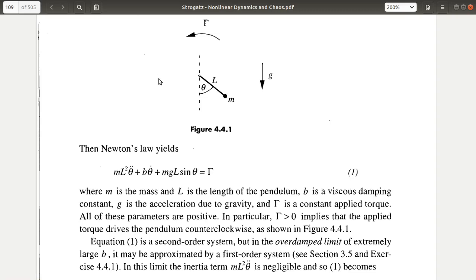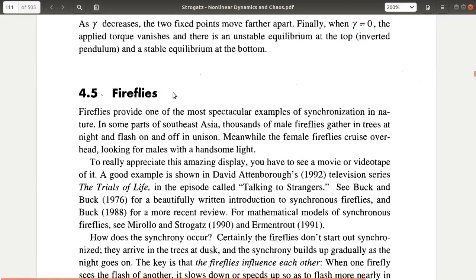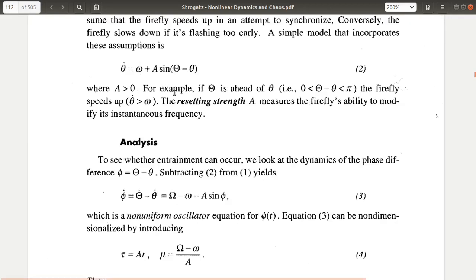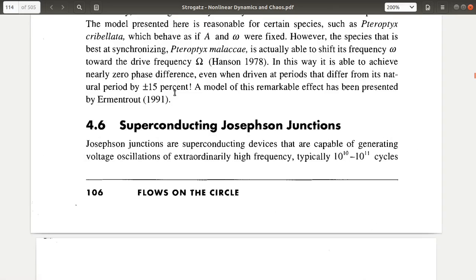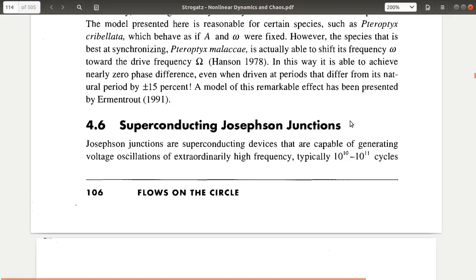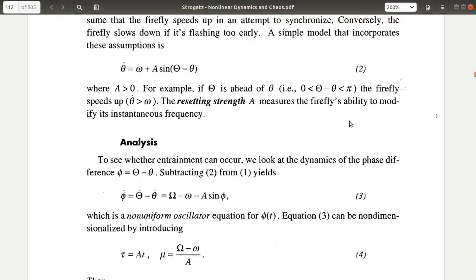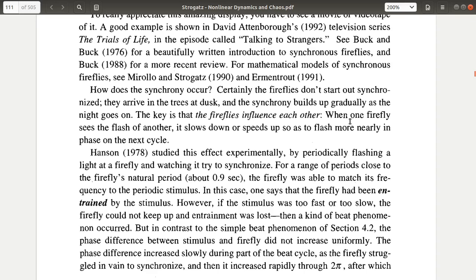So, that is one physical example. And in this book, they have discussed two more examples. And one is an example on fireflies. And another example is on an electrical engineering, which is a superconducting Josephson junction. And I will let you guys to read these two sections as a reading exercise.